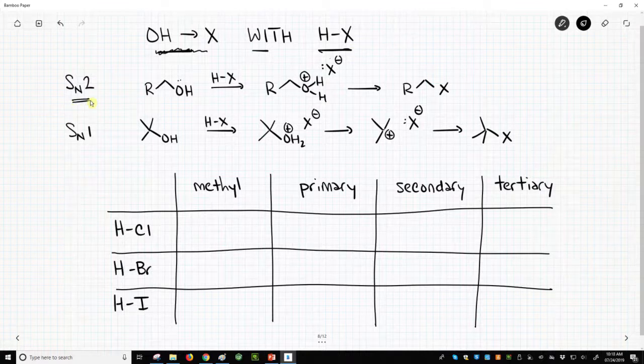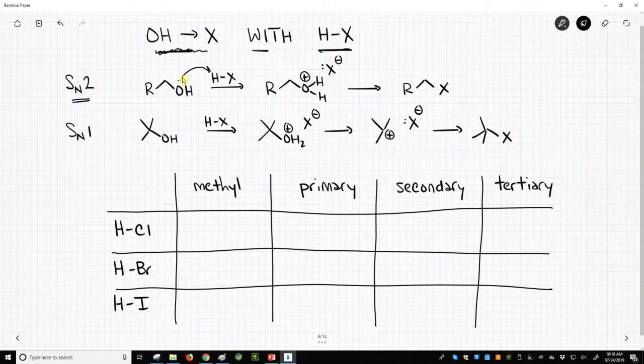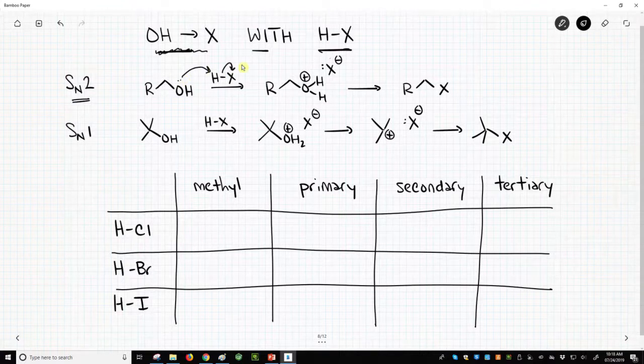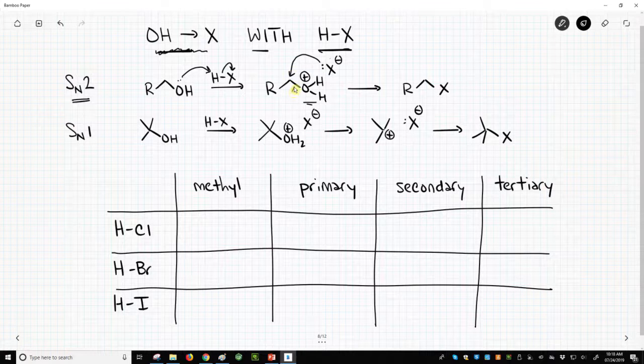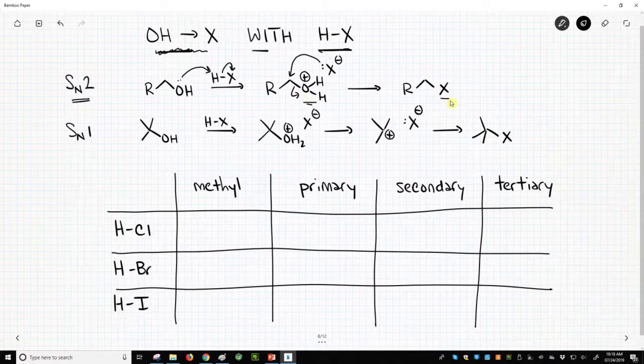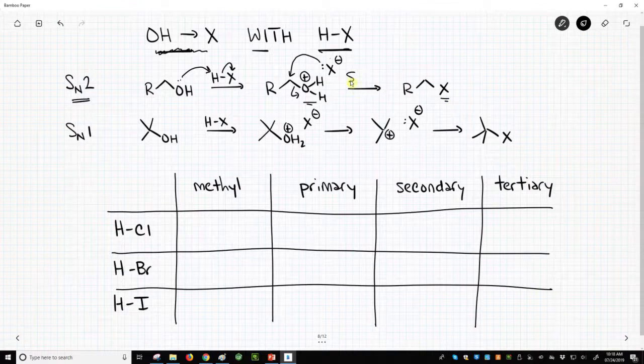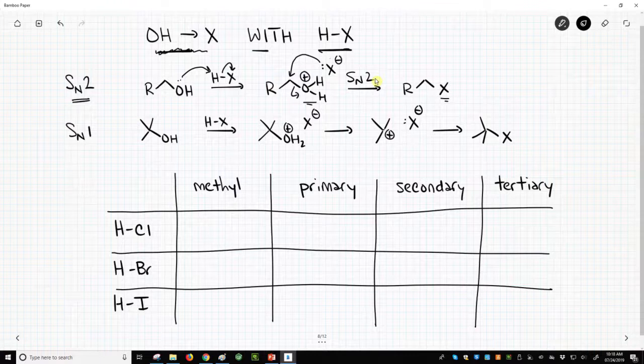For the SN2 pathway, we're going to take our alcohol and treat it with HX. We will protonate the alcohol. That'll make the alcohol into a leaving group, and under the SN2 process, the halide will come around, attack the carbon, kick out water as a leaving group, and we'll have our substitution. This key step was an SN2 reaction.